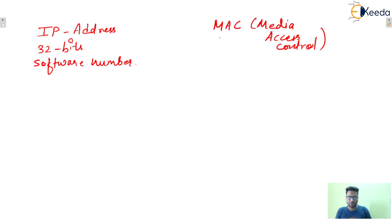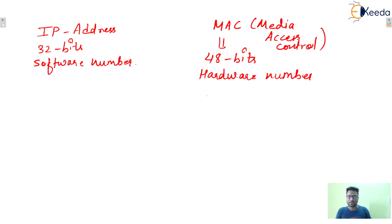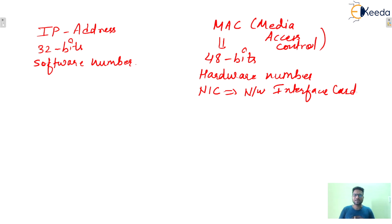MAC address is of 48 bits and it is a hardware number. Hardware number means it is hard-coded on the NIC — NIC means Network Interface Card. In your system, when the NIC is present, this 48-bit MAC address is hard-coded on it — it is permanent and fixed.